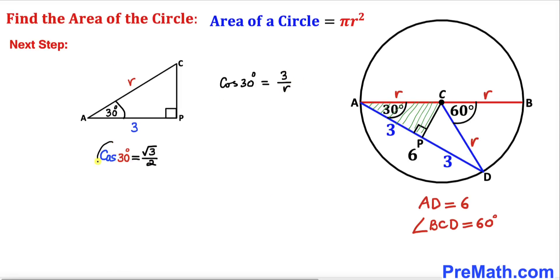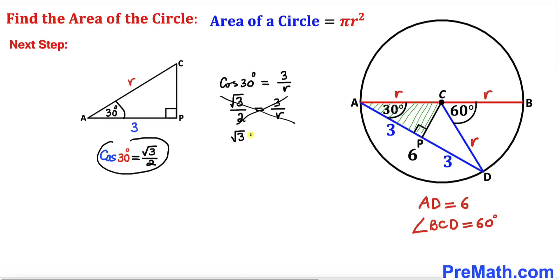We know that cosine of 30 degrees is square root of 3 divided by 2. So we write: square root of 3 divided by 2 equals 3 divided by r. Cross multiplying gives us square root of 3 times r equals 6. Dividing both sides by square root of 3 gives us r equals 6 divided by square root of 3.